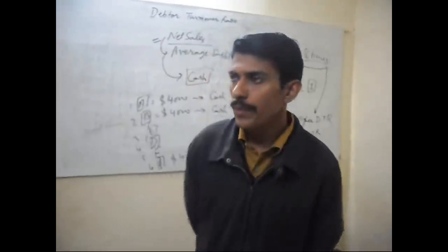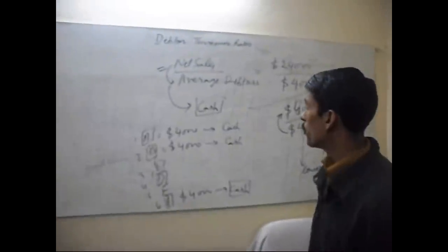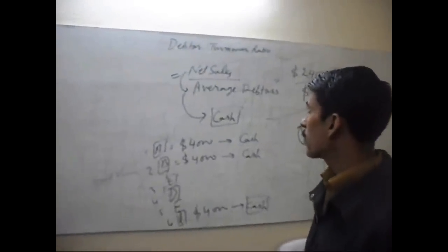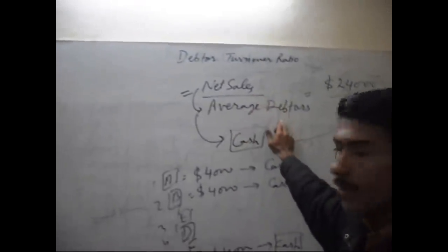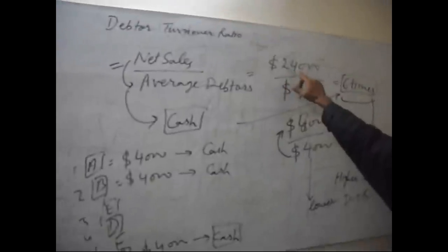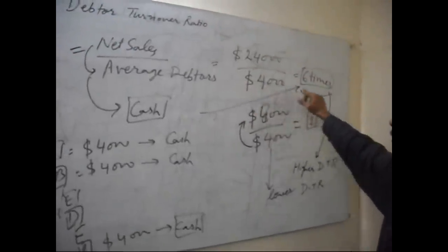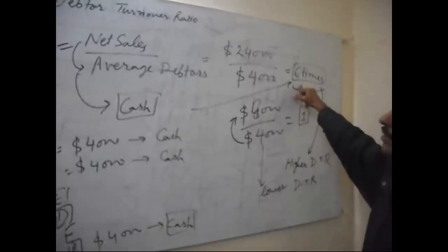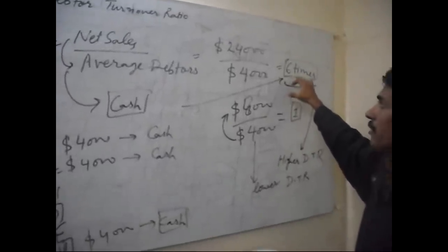It's me Vinod and today's topic is Debtor Turnover Ratio. Debtor Turnover Ratio is the relationship between the sale and debtor. If net sale is $24,000 and debtors is $4,000, then debtor turnover ratio is 6 times.